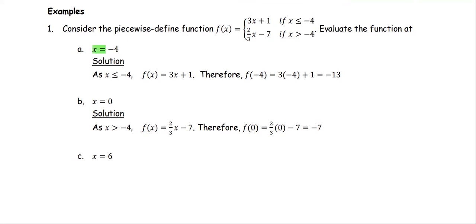When we evaluate at x equals negative 4, the function is defined as 3x plus 1, which is the top function. Therefore, when you evaluate the function, you input x as negative 4 and simplify the numbers to be negative 12 plus 1, which equals negative 11.